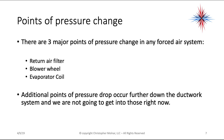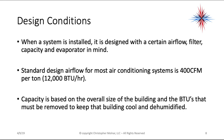There are three major points of pressure change in any forced air system: the return air filter, the blower wheel, and the evaporator coil. Additional points of pressure drop occur further down the ductwork system, and we'll address those separately. When we talk about design conditions, it is when a system is installed, it's designed with a certain airflow, filter capacity, and evaporator in mind.